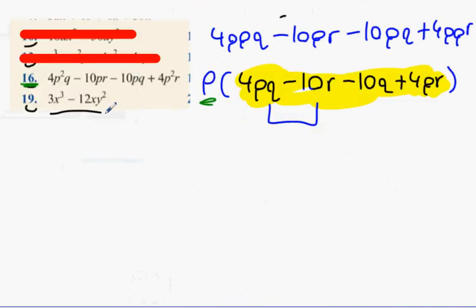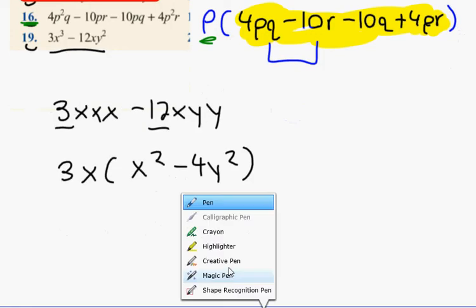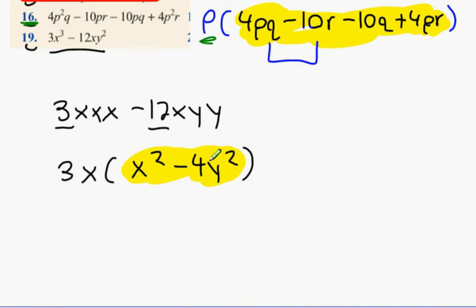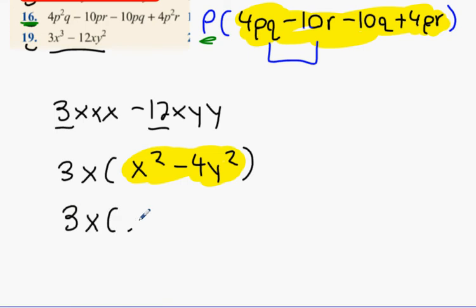Now, question 19. What do they have in common? 3XXX minus 12XYY. What can you take out? 3X. Good man. Take out the 3X. And what's left over? X squared minus 4Y squared. We've seen tons of them. What is it? Difference of two squares. So how do I do that? X plus 2Y and X minus 2Y. And you're done. That's 19. Done and dusted.